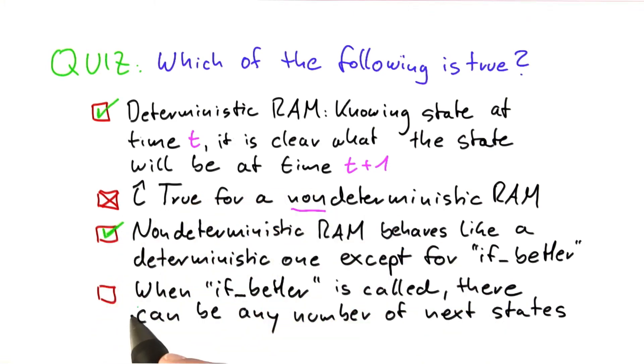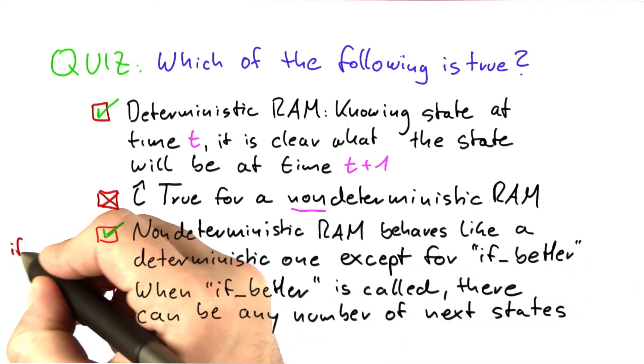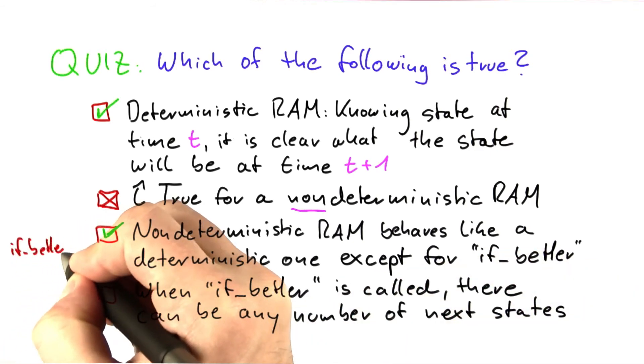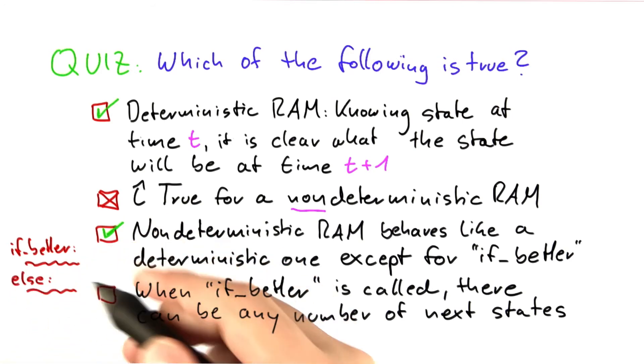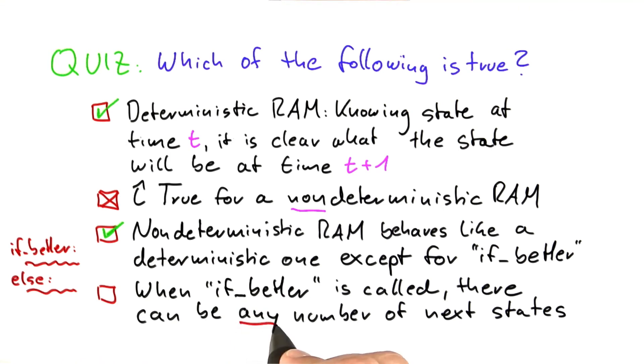And when the if better is called there cannot be any number of next states. There can only be two because as you'll remember the if better function works as follows. You call if better, then there's some code here. And then you have an else statement and there's some code here. But there's only two possibilities. So it's not any number of states. It's actually just two. So this is also false.